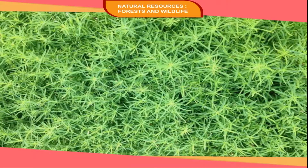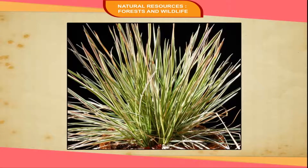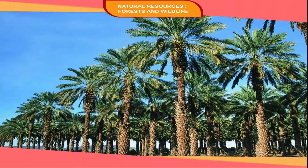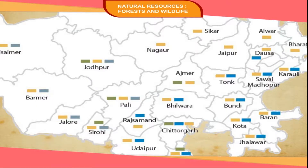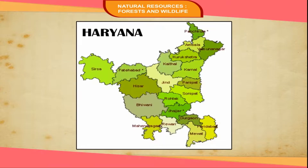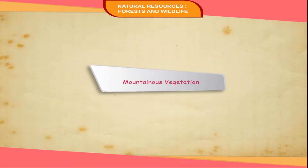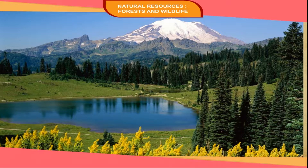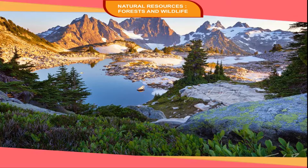In thorn and scrub forests, only thorny grass, scrub bushes, cactus, and date palm grow. They are mainly found in Rajasthan, Gujarat, and parts of Punjab and Haryana. For mountainous vegetation, on the slopes of the Himalayan mountains, vegetation changes with altitude because temperature decreases with altitude.